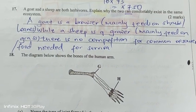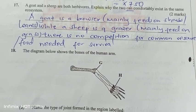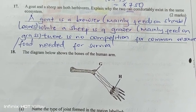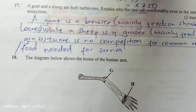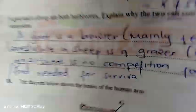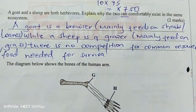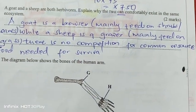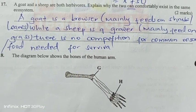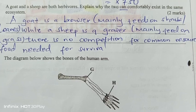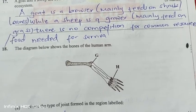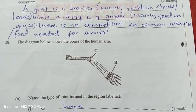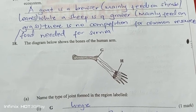A goat and a sheep are both herbivores — explain why the two can comfortably exist in the same ecosystem. A goat is a browser and mainly feeds on shrubs and leaves, whereas a sheep is a grazer and mainly feeds on grass, so there is no competition for food.